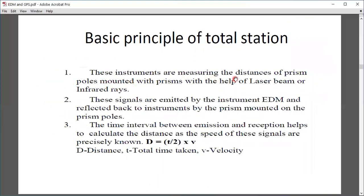These instruments measure the distance to a prism pole mounted with prism using laser beam and infrared rays. In these instruments, there is a transmitter in the Total Station and a prism. Laser beams are sent from the Total Station to the prism and reflect back, measuring both angle and distance. The latest technology can work without a prism.